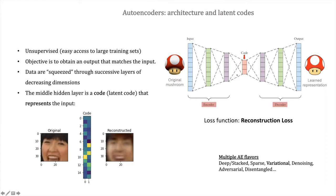Hopefully throughout this procedure you are maintaining the most salient features — the most important features of your original dataset. The middle layer, what you end up with after going through the encoder, is a latent code that represents the most salient features of your input. You have two components: the encoder that performs the compression and the decoder that performs the decompression of the latent code. The way you estimate the weights for this model is by using a reconstruction loss, which quantifies the difference between your input and your output.